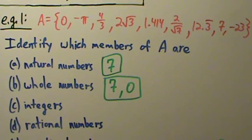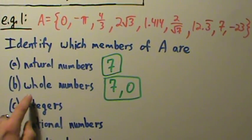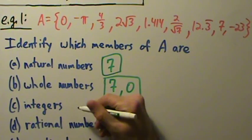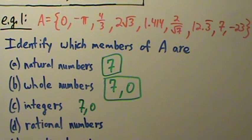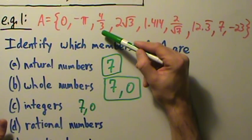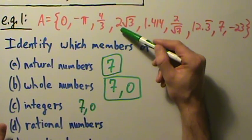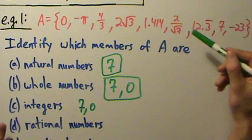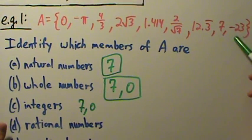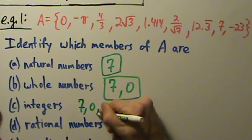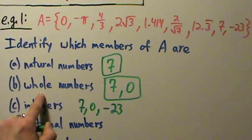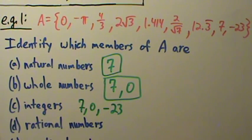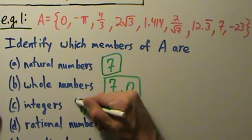What about integers? Well, remember from the previous video, every whole number is an integer, so our answer at least has seven and zero. Going through the list: negative pi — no; four-thirds — no, that's not an integer; two root three — no; and negative twenty-three — yes. So the integers are zero, seven, and negative twenty-three.